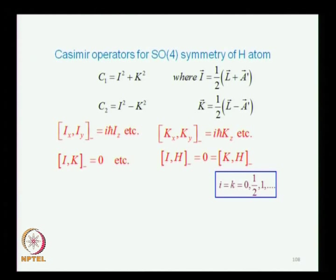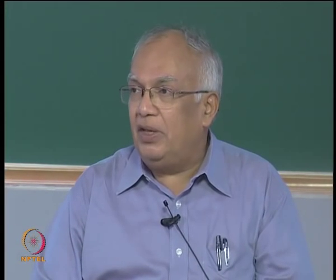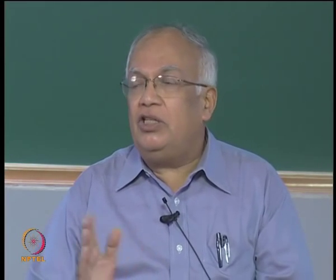We got the energies of the hydrogen atom without using the Schrödinger equation. We got the 1 over n² formula, and we were able to do a lot more than what we could with the Schrödinger equation, because the Schrödinger equation leads to a situation which cannot be reconciled with the degeneracy found in the hydrogen atom. When you understand the symmetry of the hydrogen atom and recognize that it is SO4, symmetry and degeneracy go together.